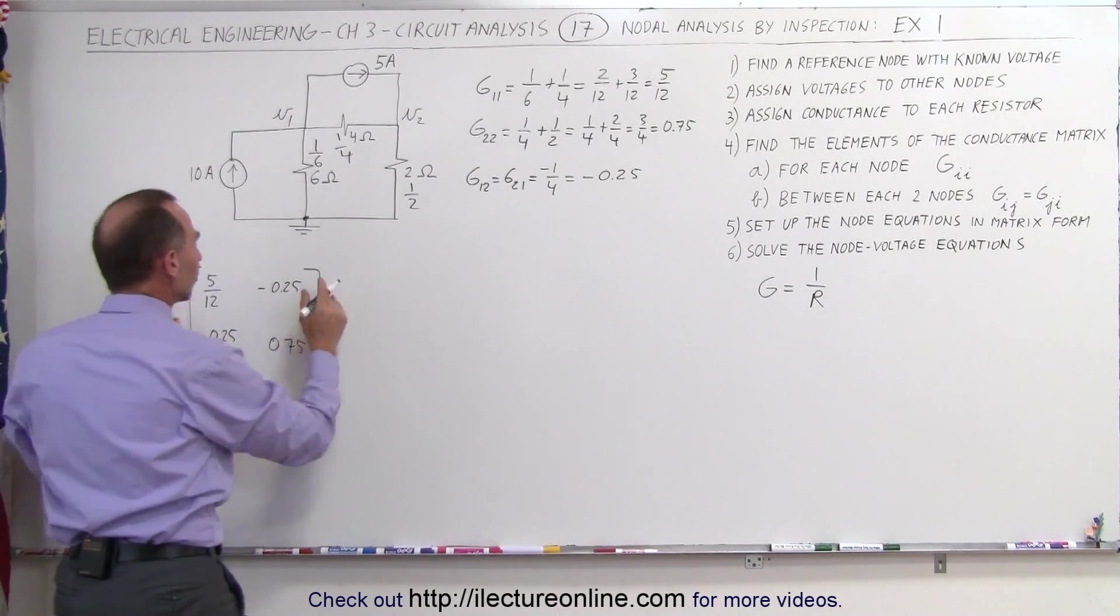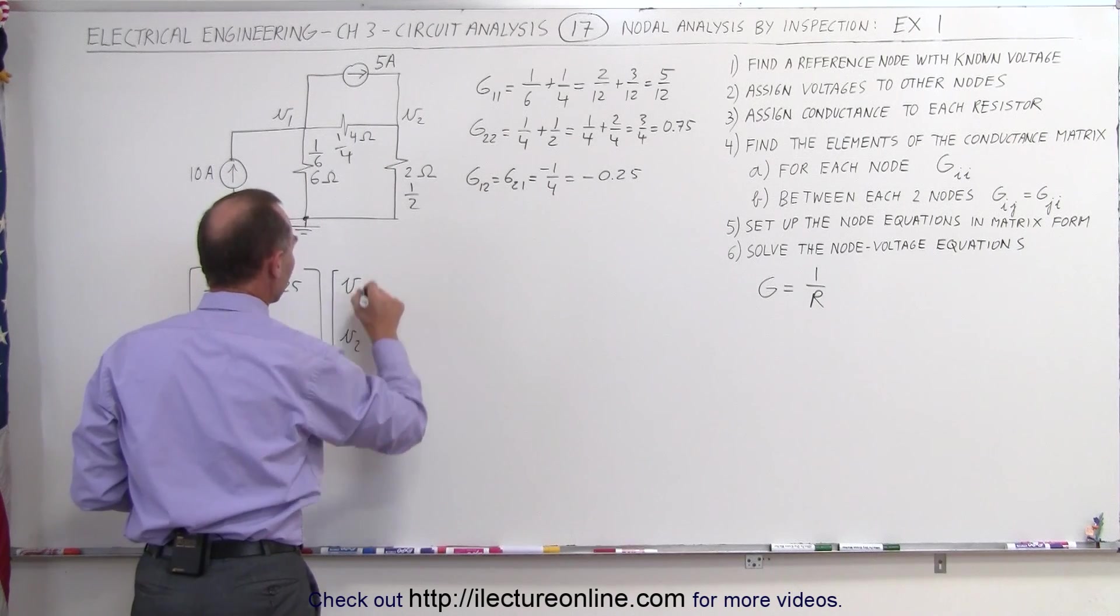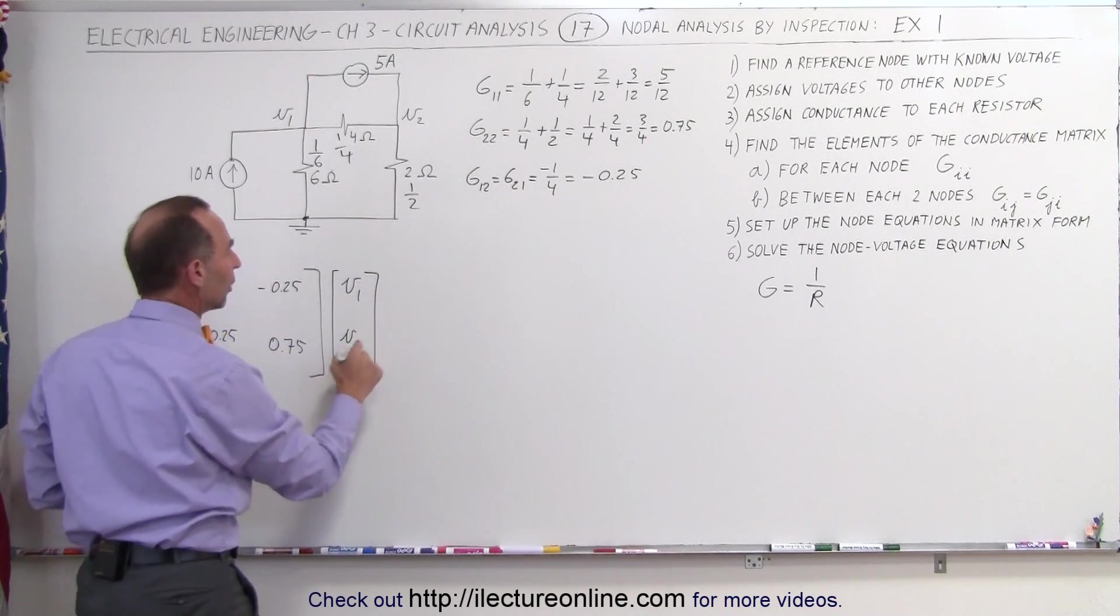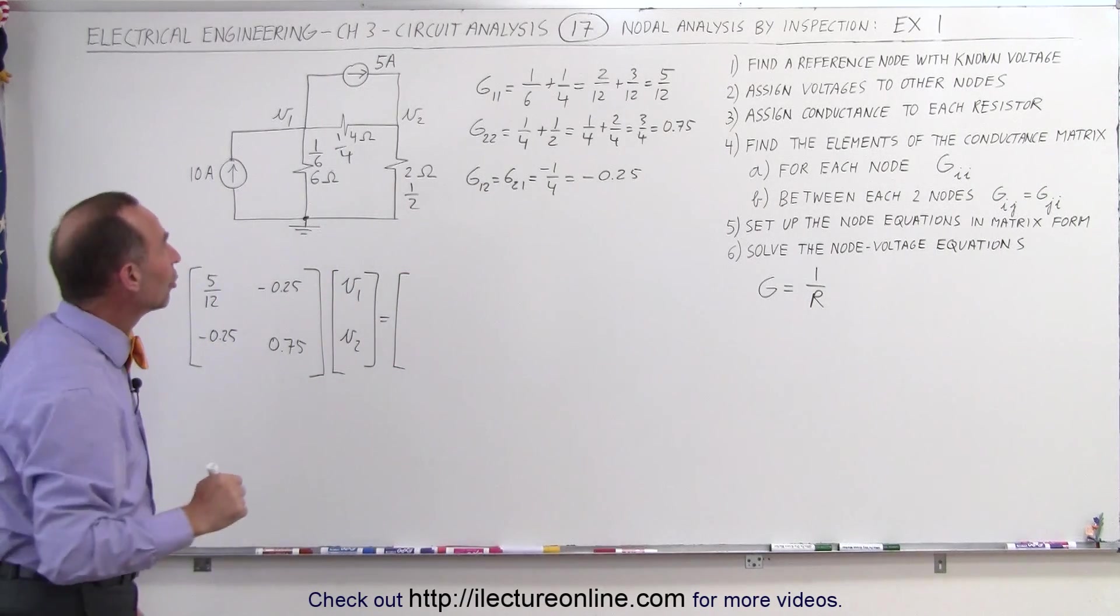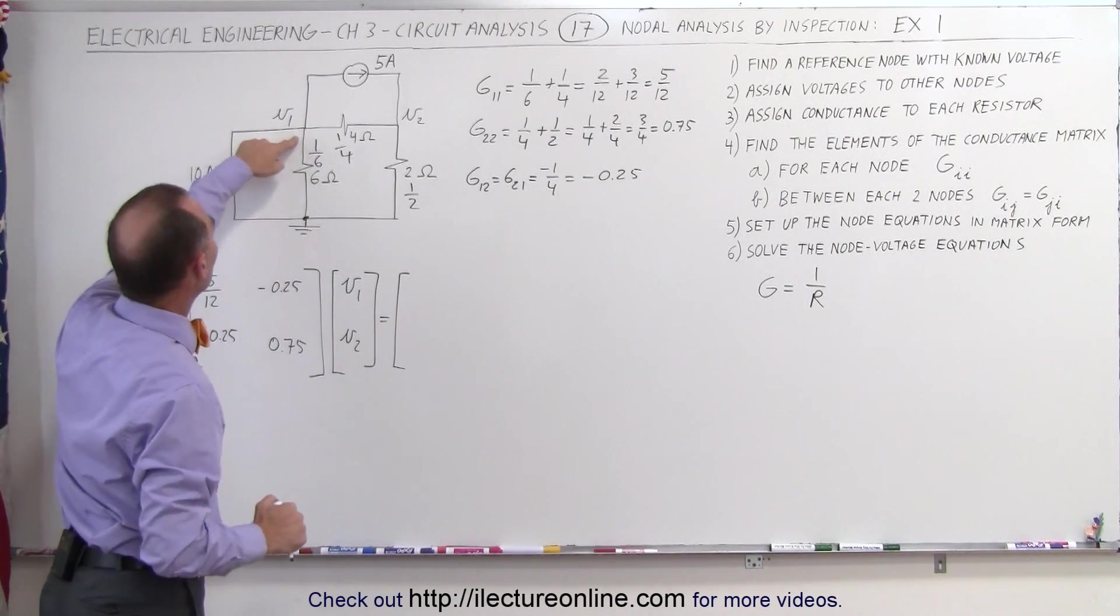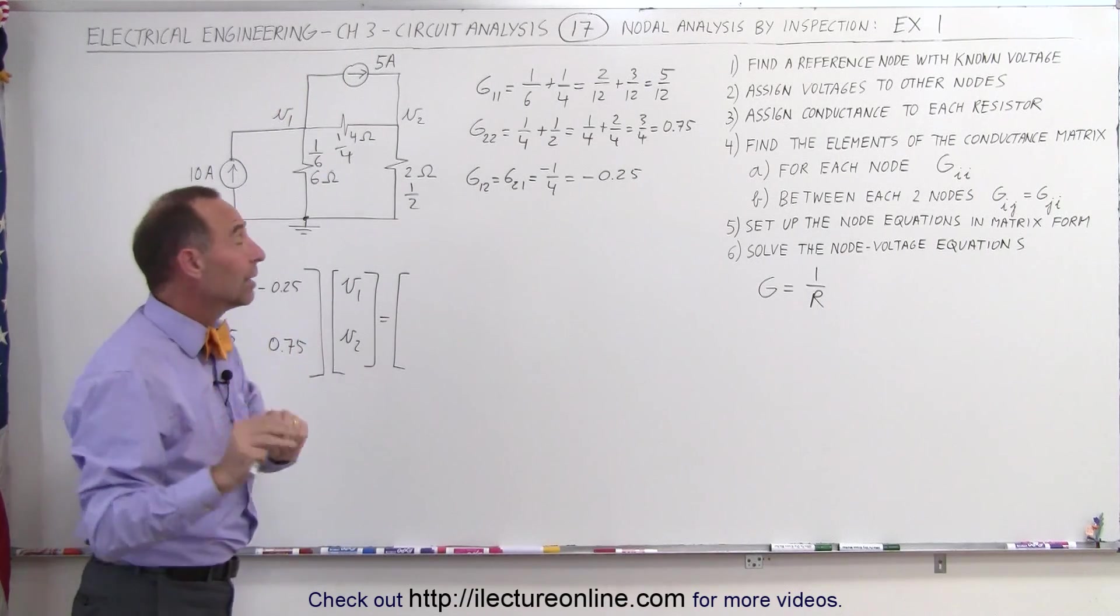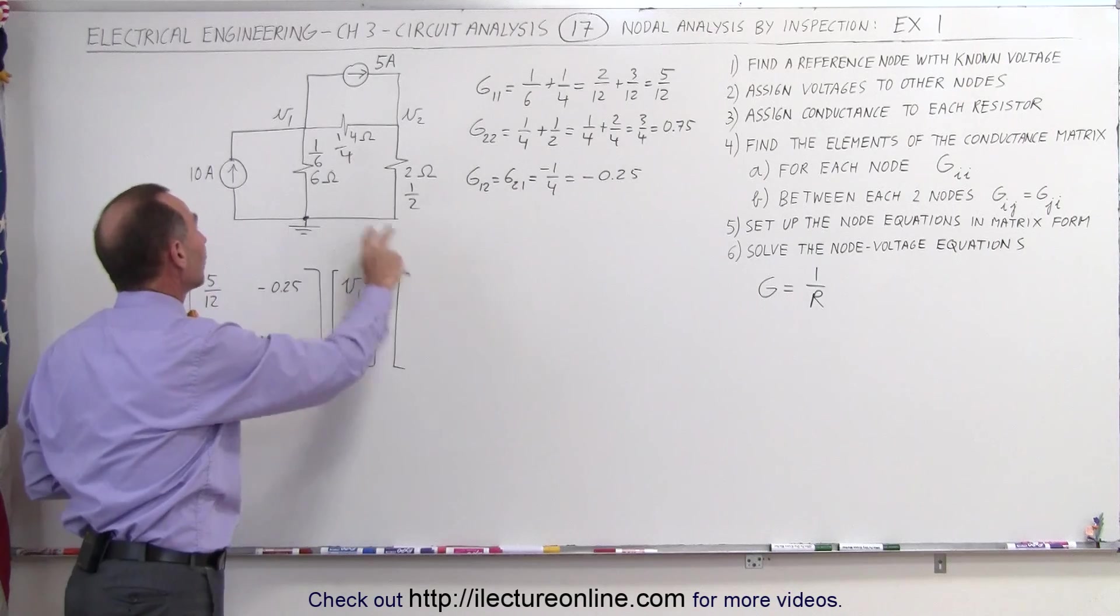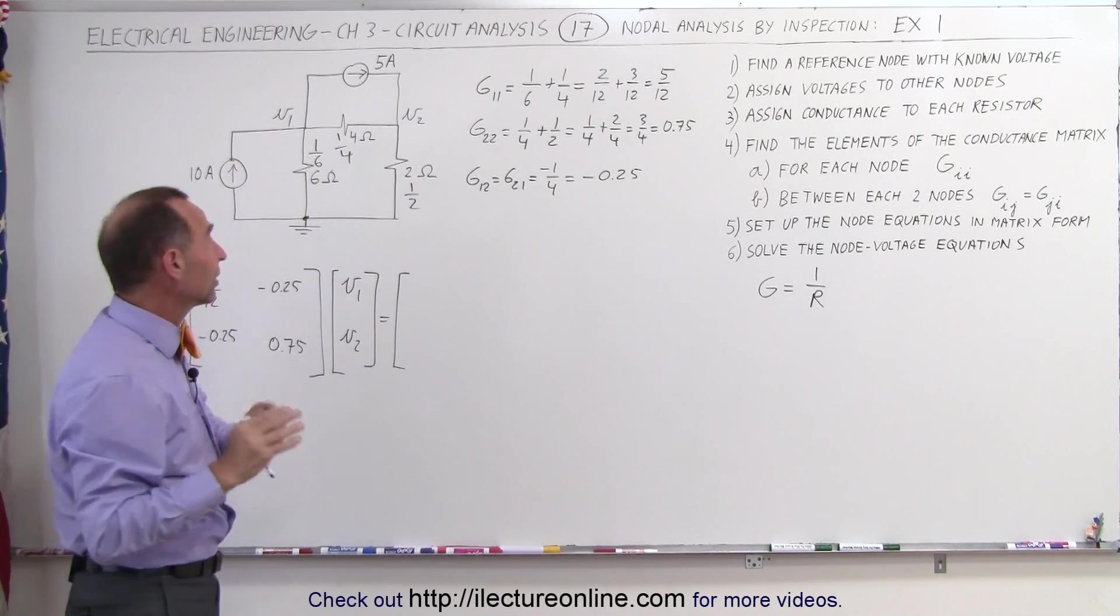We now take this matrix, we multiply it times the two voltages, V1 and V2. Those are the unknowns that we're looking for, and we set that equal to the currents entering and leaving each of the nodes. In the case of node 1, we have 10 amps entering, 5 amps leaving. Now what we're doing here is we're only putting in the currents of the current sources, not the currents of any of the other branches, so don't get that confused.